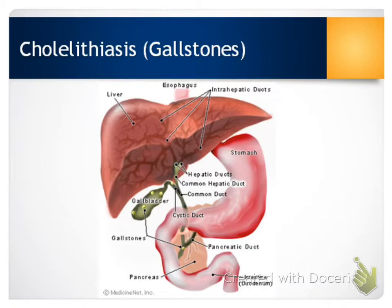People with gallstones can have very mild to really no symptoms to very severe symptoms, and it really depends on how many stones they have, where the stones are, and if they're lodged. When they do exhibit symptoms, typically they're going to have pain in the right upper quadrant, ranging from very mild to very severe. That pain can radiate to the right chest and right shoulder. Patients might have indigestion, fever, and jaundice.